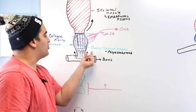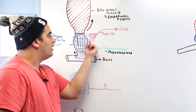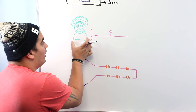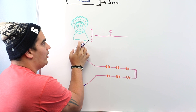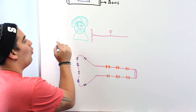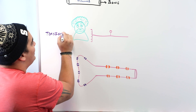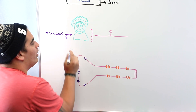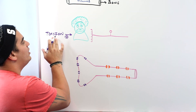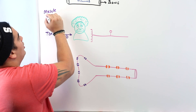Now let's zoom in on the Golgi tendon organ and its connection to the type 1b fibers. The Golgi tendon organ is a proprioceptor — it detects tension within the tendon. That tension is generated from muscle contraction.